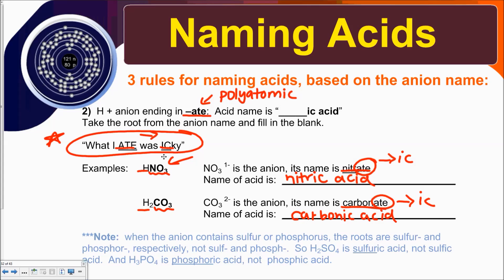Here's an important exception: when an anion contains sulfur or phosphorus, the roots are "sulfur" and "phosphor," not "sulf" and "phosph." So H2SO4 — where SO4 is sulfate — is sulfuric acid, not sulfic acid. And H3PO4 — where PO4 is phosphate — is phosphoric acid, not phosphic acid. The roots for these are sulfur and phosphor. Make sure to write that down.